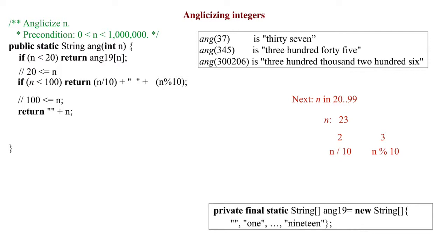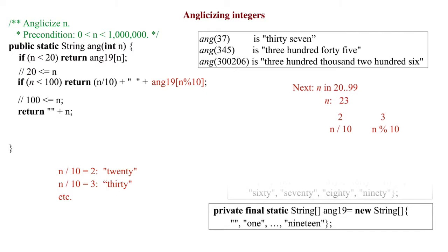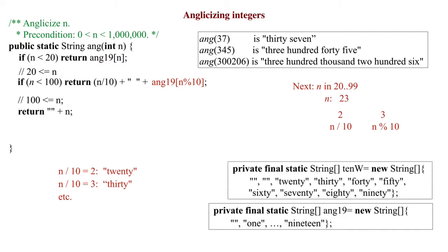How do we anglicize n div 10 and n remainder 10? Since n remainder 10 is less than 10, we anglicize it using array ang19. For n div 10 equal 2, we want the value twenty. For n div 10 equal 3, thirty, and so forth. So, we introduce a second static array and rewrite the return statement.